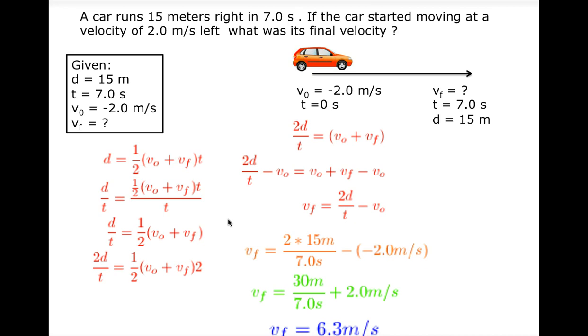To solve this problem, here is a diagram to show all the information according to the question. And here is a given box to show the information: the distance is 15 meters, the time is 7.0 seconds, the initial velocity is negative 2.0 meters per second, and the final velocity is unknown.